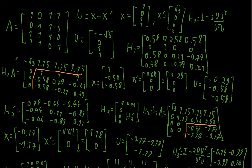I have the following matrix A — this time it's a 4×4 matrix — and I want to do a QR decomposition of it using the Householder transformation.